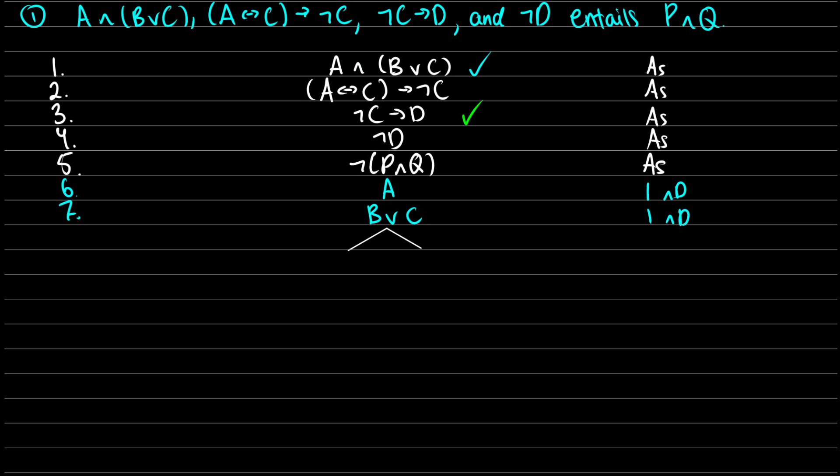So ¬C→D. Either the antecedent is false, so we'll have ¬¬C in one case, or the consequent is true, so we'll have D. This will be line 8. This comes from 3, and this is → decomposition. I'm just going to do line 9 right away, or C to get rid of double negation there. So that comes from 8, and that's DN. At this point, we can close D, because we have D and ¬D, so that's a contradiction.